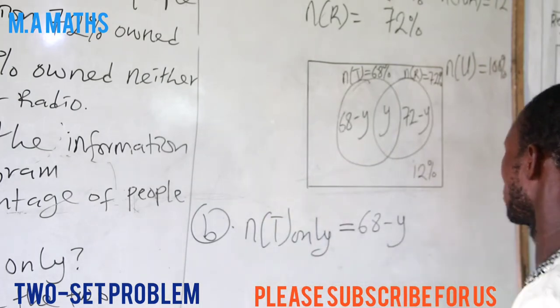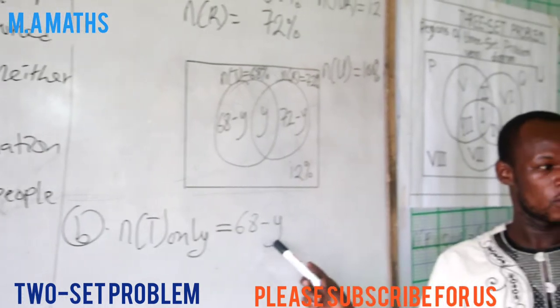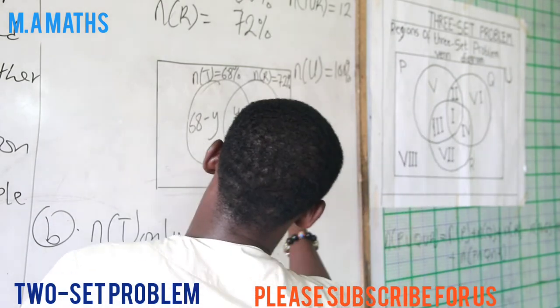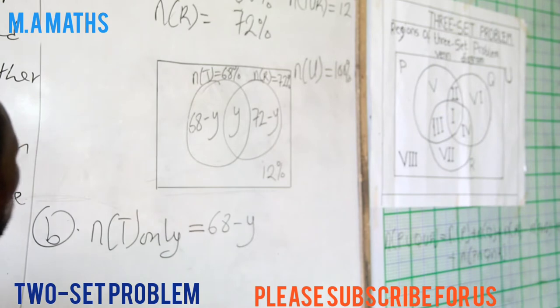For that matter we'll have 68 minus y. So n(T) only will give us 68 minus y, but we don't know the value of y. So we have to work for y. So we add all this equal to the universal set.